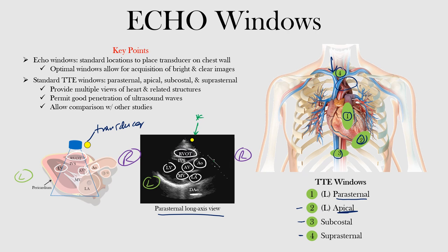These are the four main windows — areas where we place the transducer to get a great image of the heart. Remember with the transducer you can tilt and rotate it to get various views. So think of it as: four windows, and then within each window there are various views. For example, within the parasternal window there is the long axis view and the short axis view, and within the short axis view there are different levels — aortic level, mitral level, papillary muscle level, and so forth.